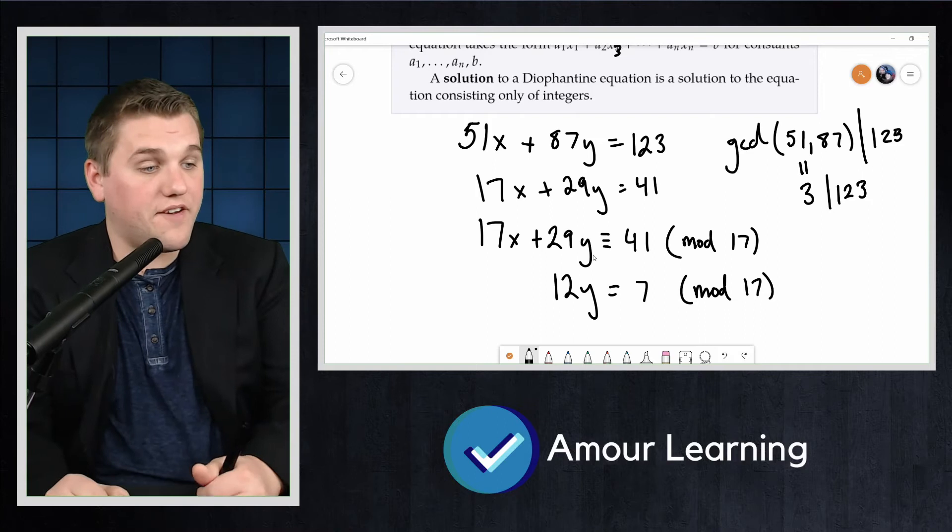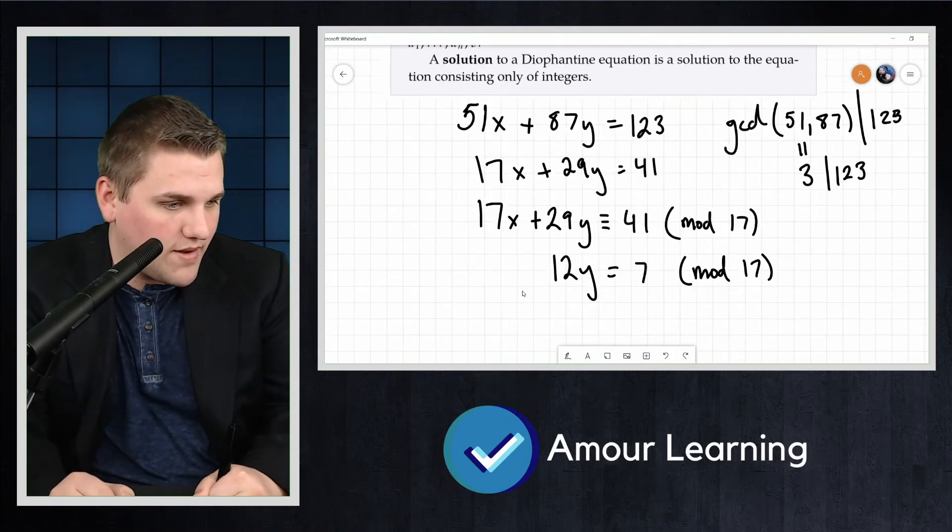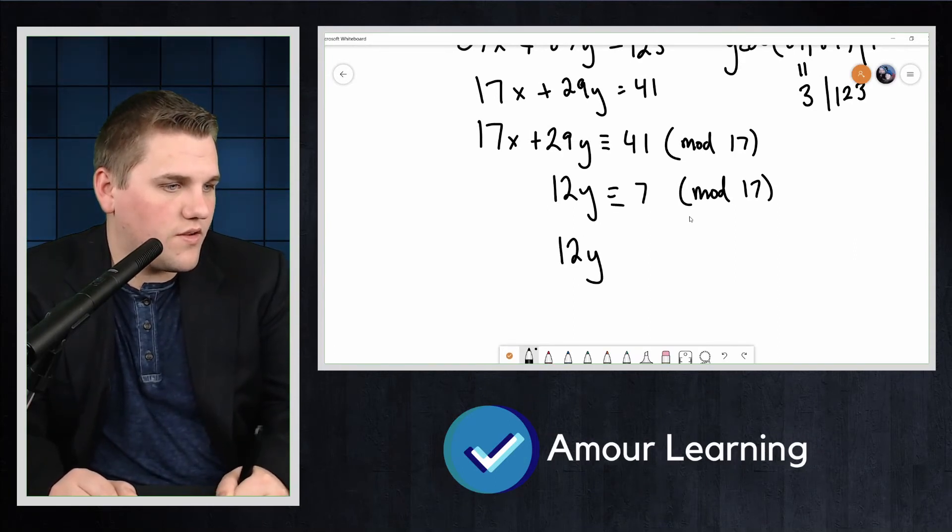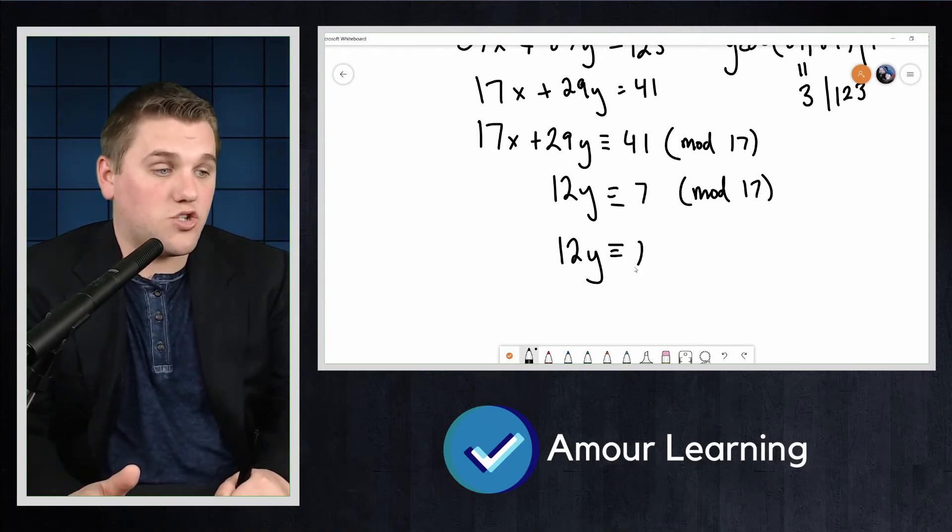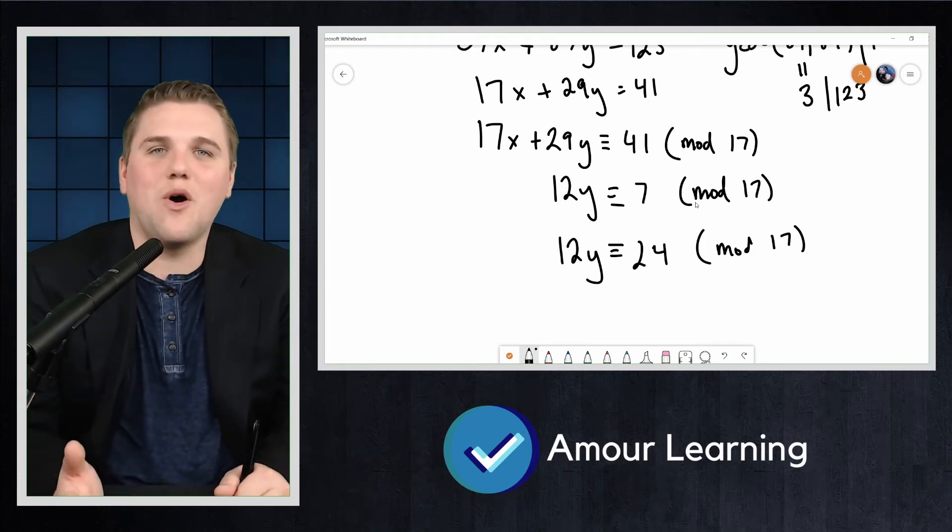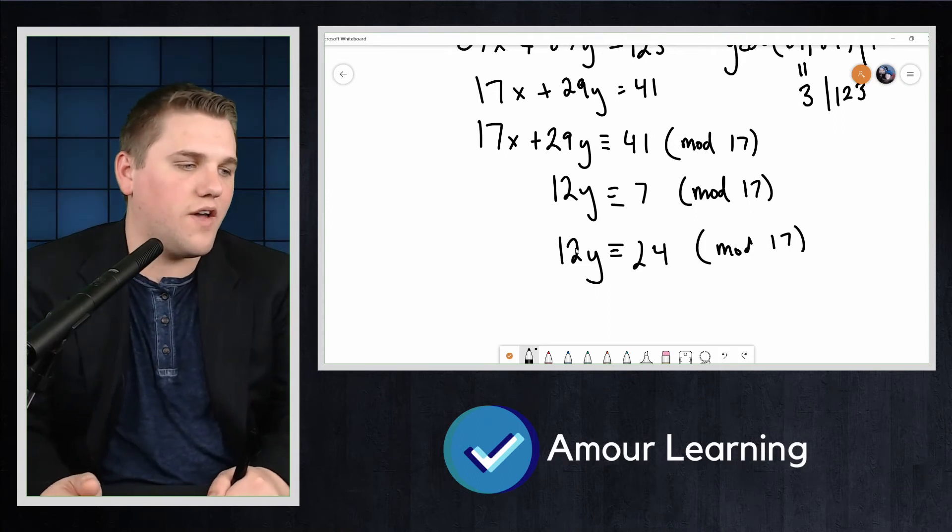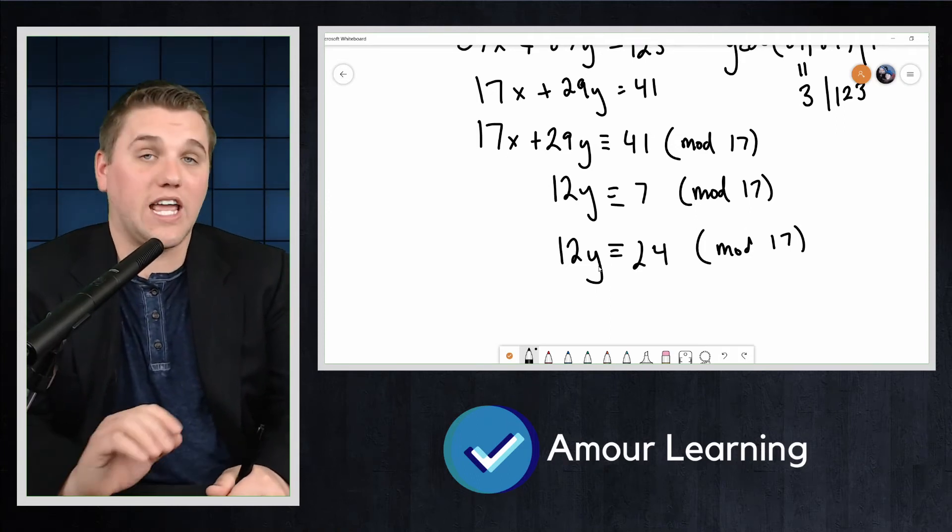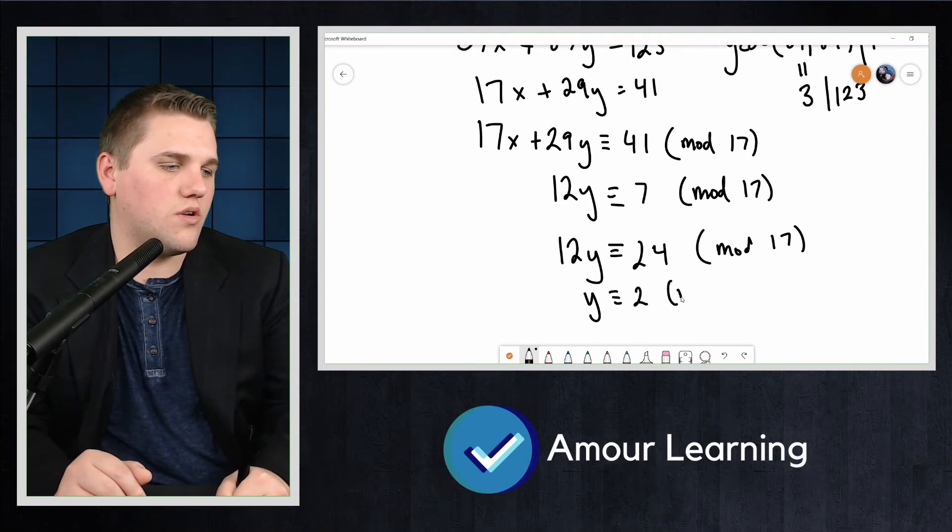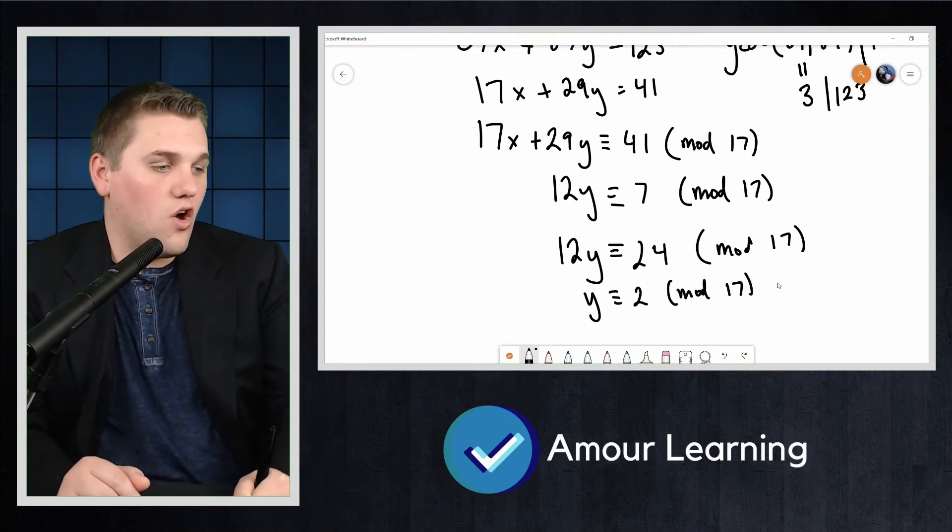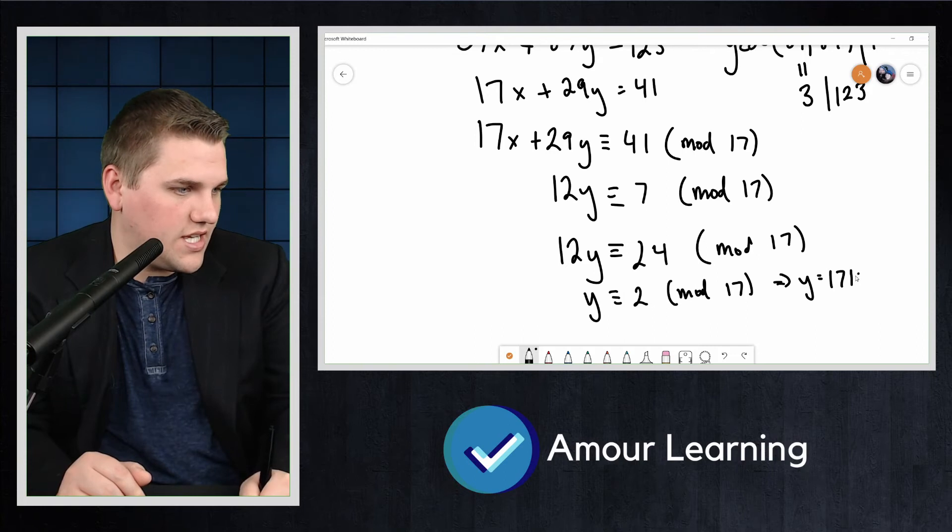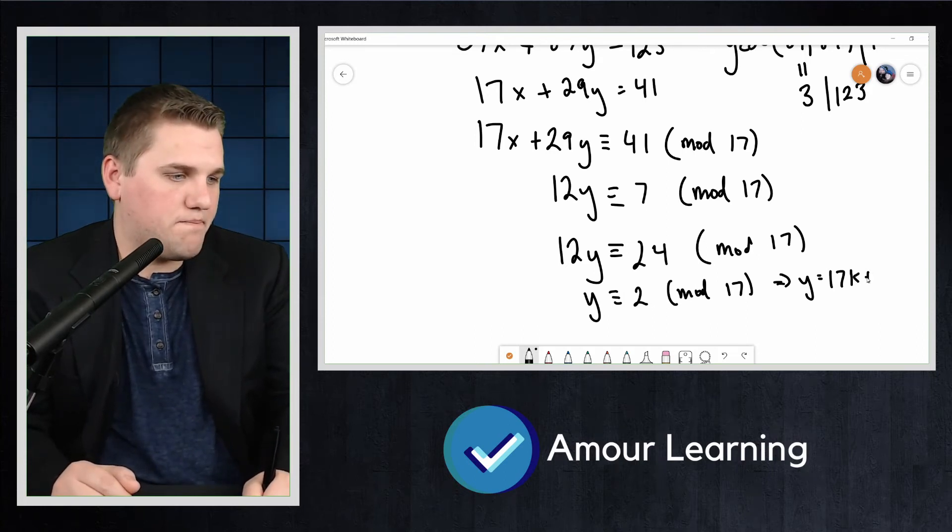Okay, well 7 is the same as 24 mod 17. Now why did I pick 24? Because I can divide both sides by 12 since the GCD between 12 and 17 is 1. I can divide safely on both sides by 12. And so y is congruent to 2 mod 17, which means that y = 17k + 2.